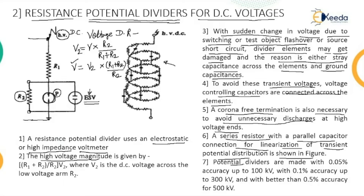The range of this potential divider with 0.05% accuracy is up to 100 kilovolts — meaning the voltage drop may be 0.05% of 100 kV. With 0.1% accuracy, voltage measurement is up to 300 kV using this electrostatic voltmeter. With 0.5% accuracy, measurement is possible up to 500 kV.